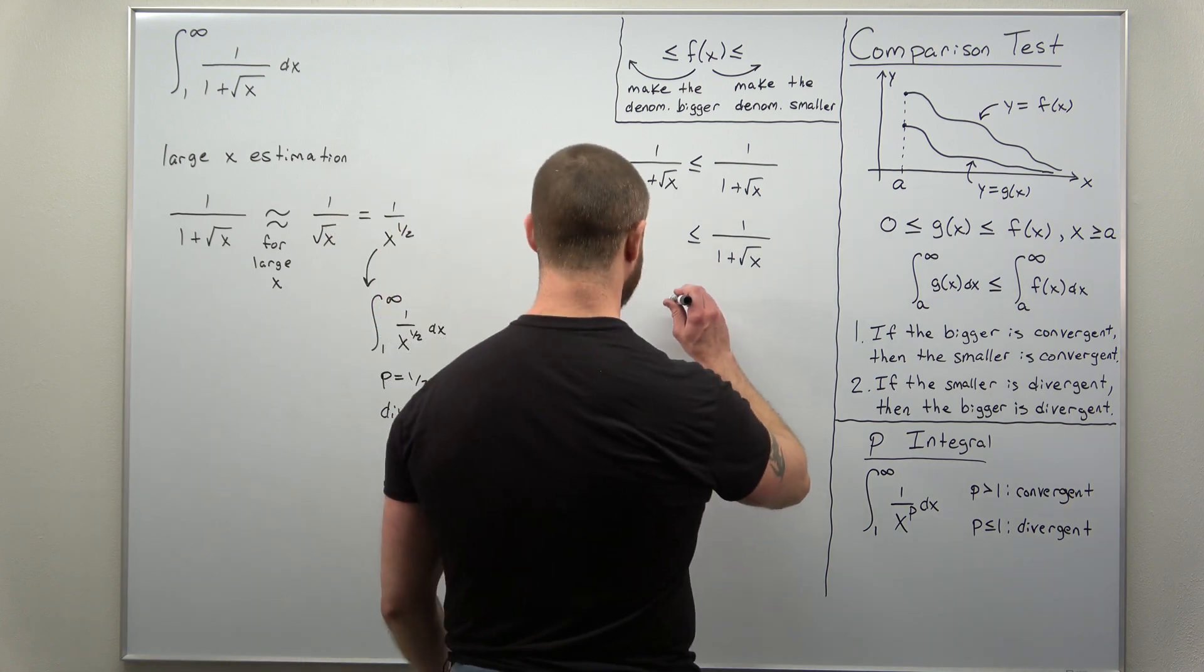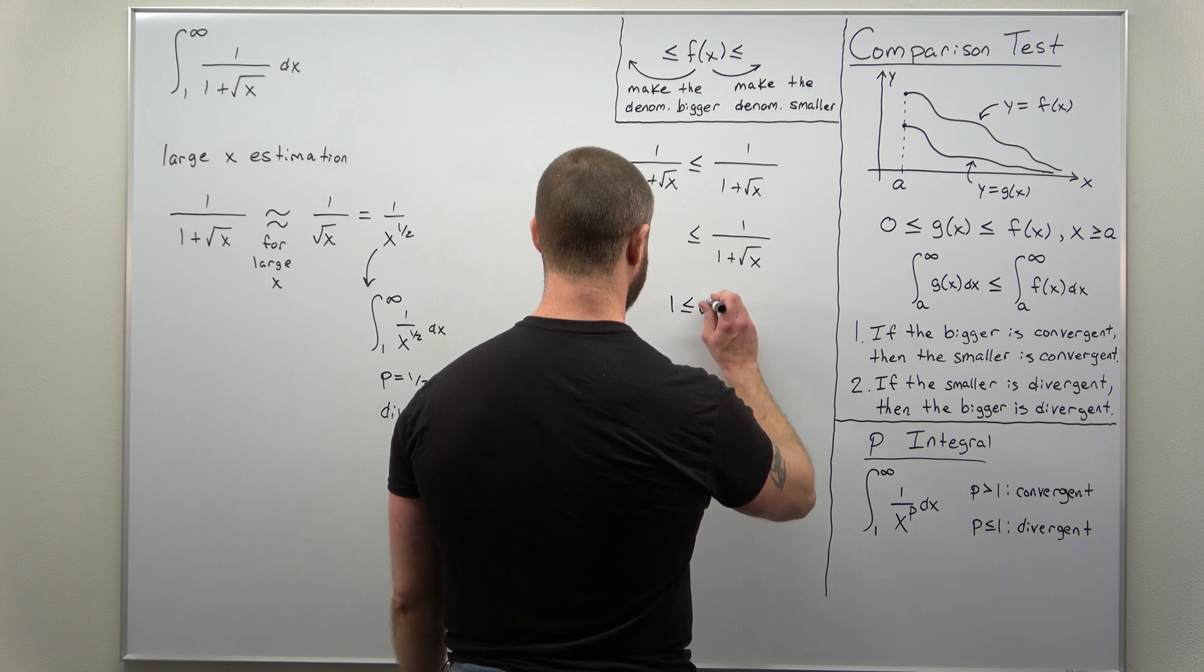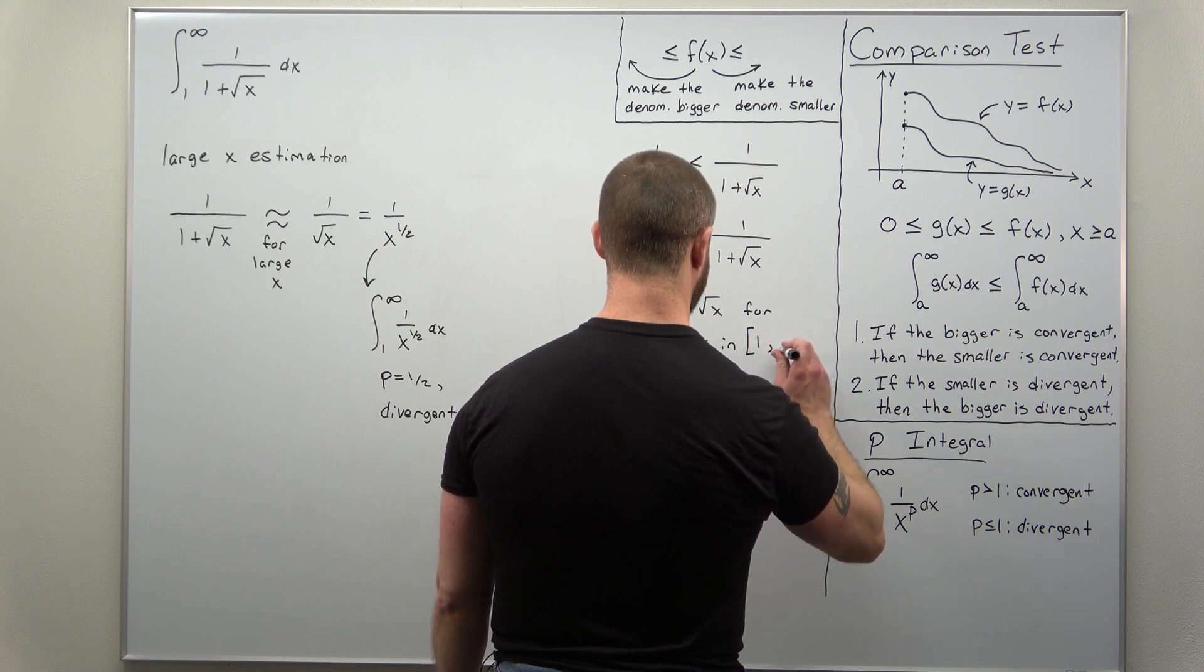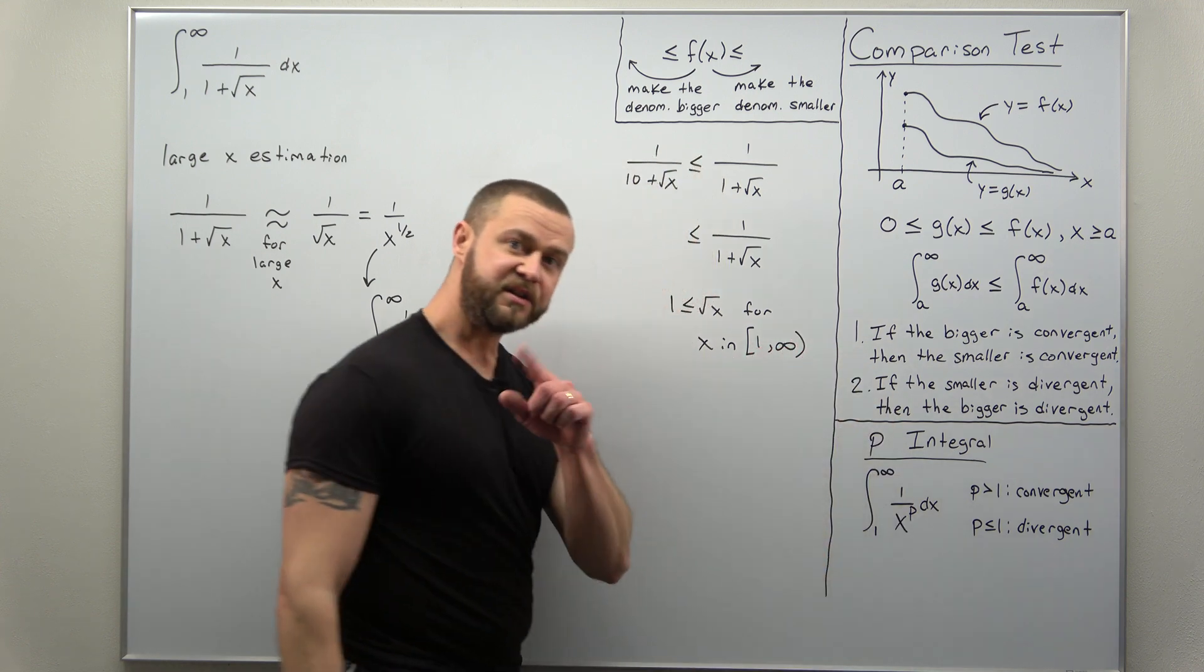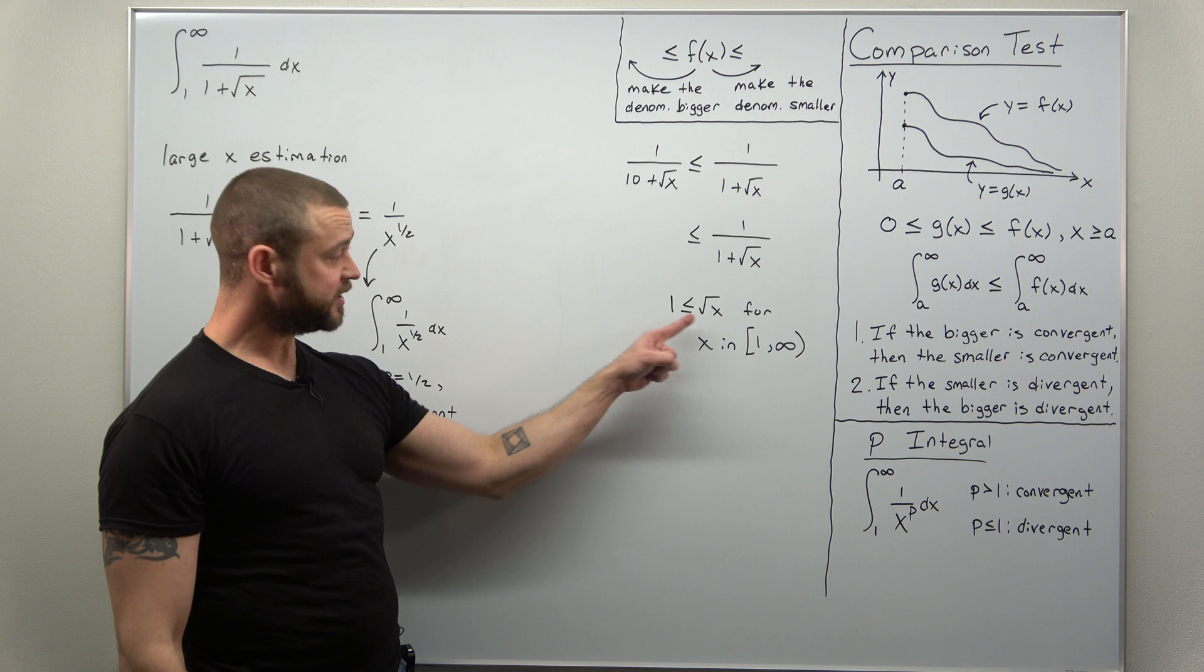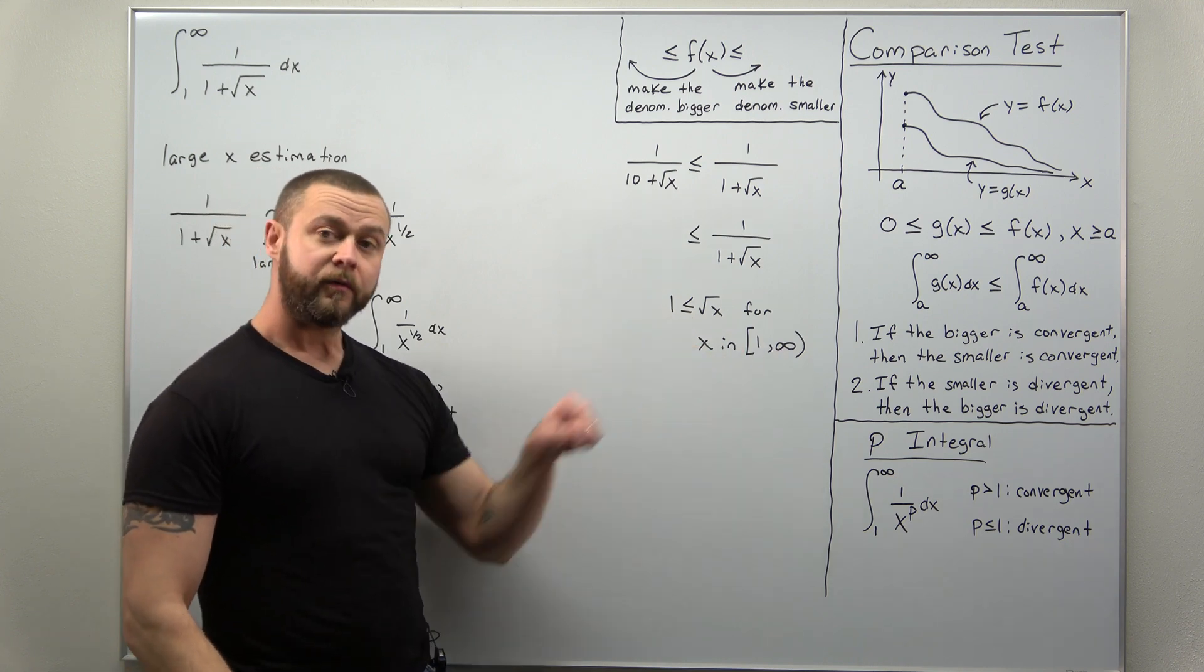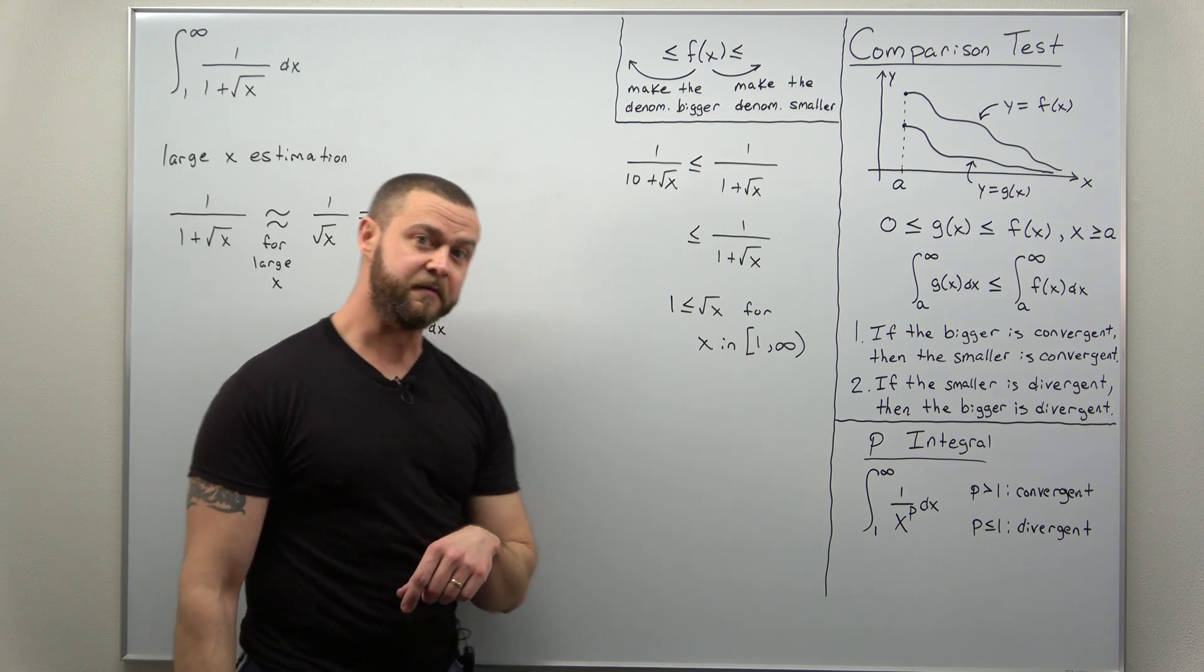What we're going to use is the fact that square root of x is bigger, greater than or equal to 1, for all values of x from 1 to infinity. That's our interval here for your values of x.